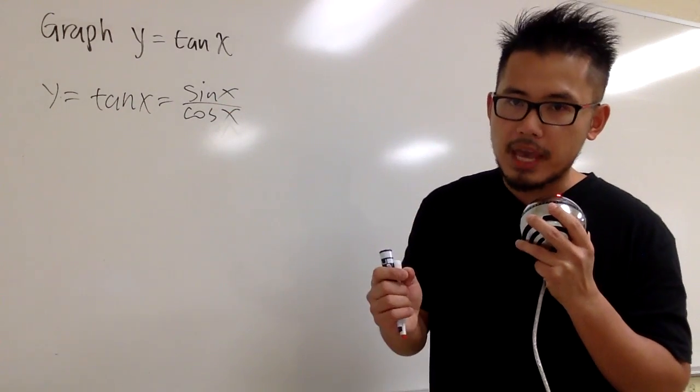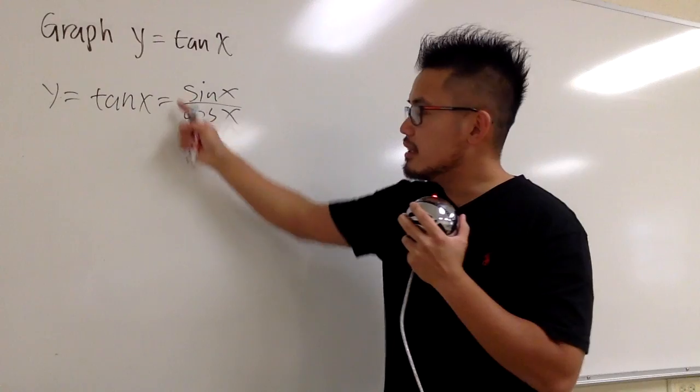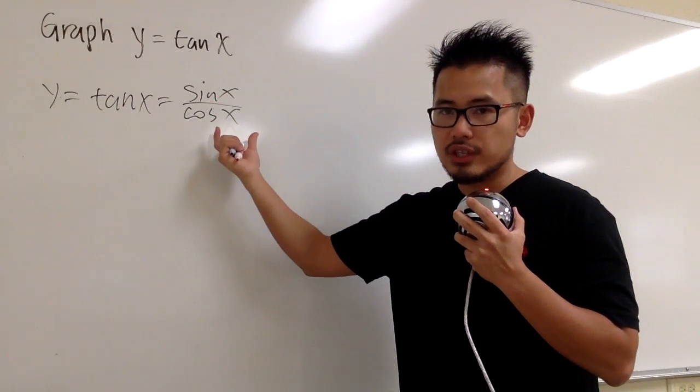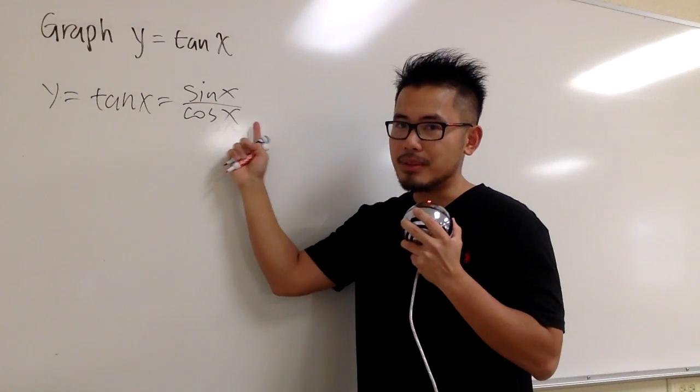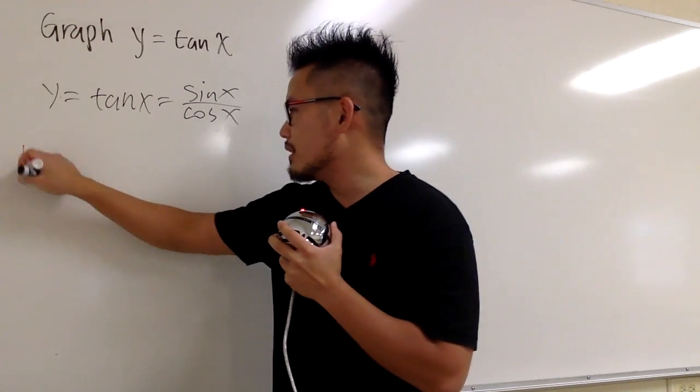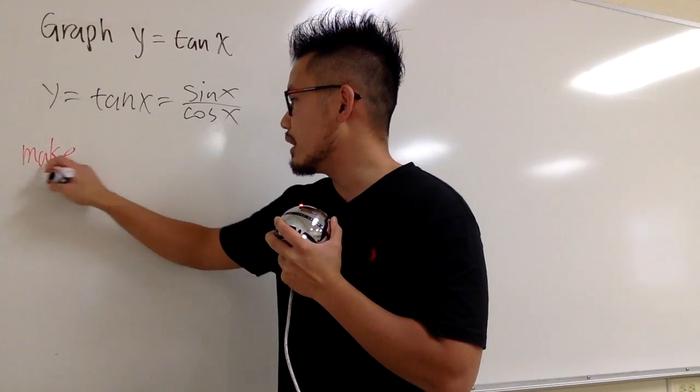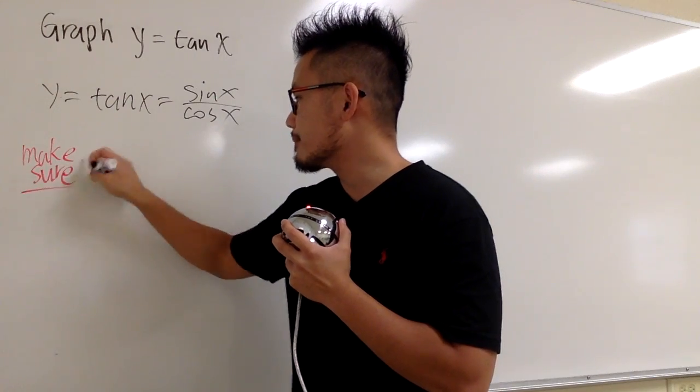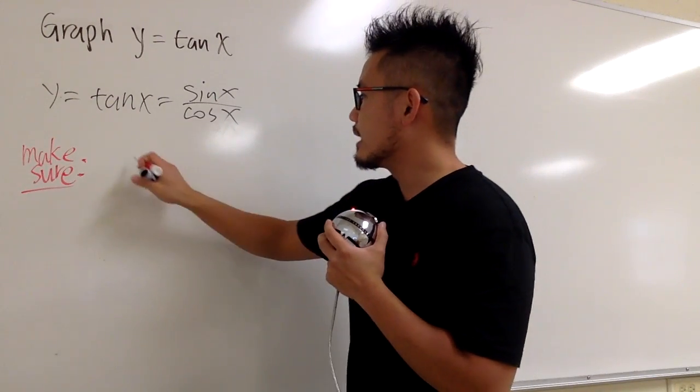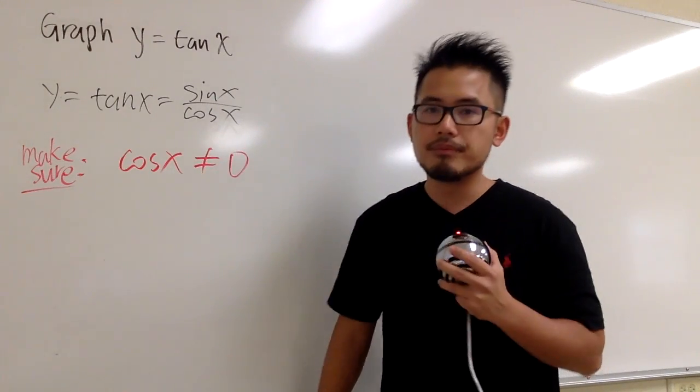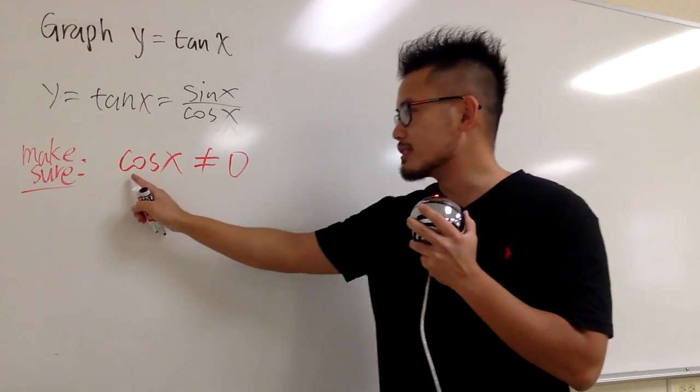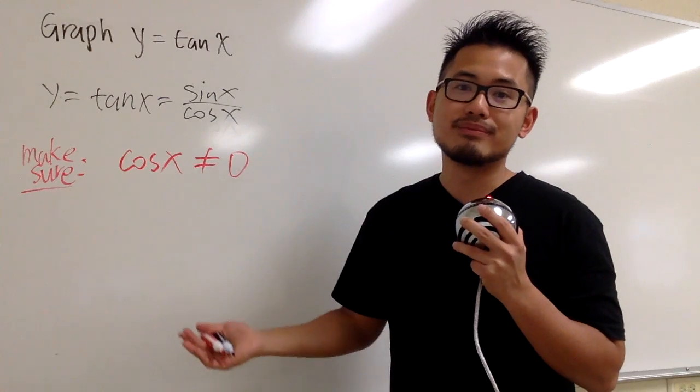And then we have to remember that to find the domain, we have to make sure that in this situation, we have a fraction. So, we have to make sure the denominator cannot be zero, right? So, let me write it down right here. We are going to make sure, and this is just to find the domain, make sure that the bottom, which is the cosine x, we don't want it to be zero. And now, cosine of what is zero?